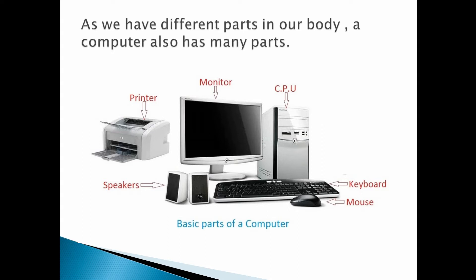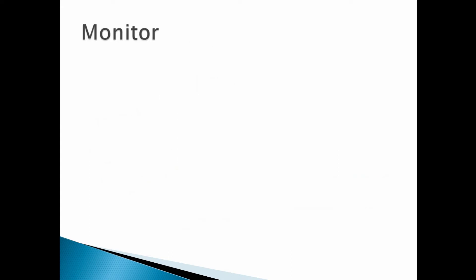A computer has four main parts. The first one is monitor, second CPU, third keyboard, and fourth is mouse. But in this picture, you can also see two more parts of a computer system, that is printer and speakers. Now, one by one we will discuss each and every part of a computer system.